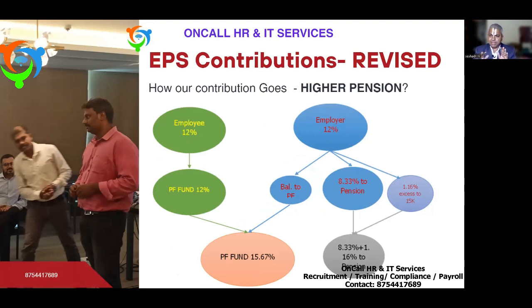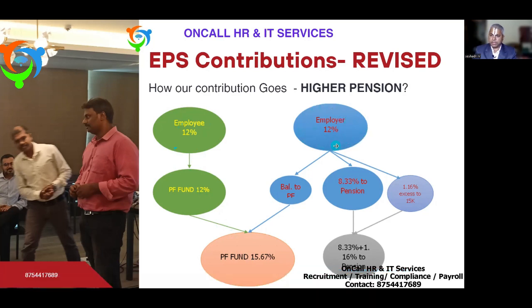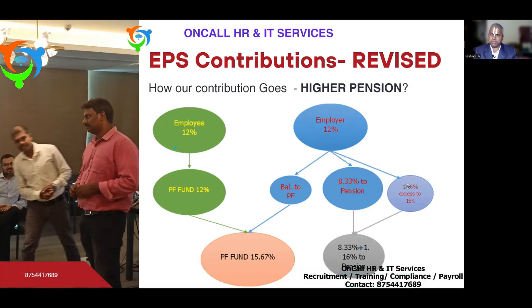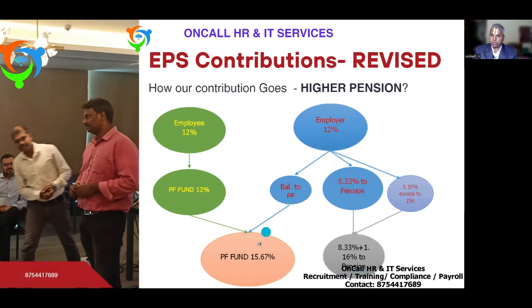As per the gazette dated 3rd May 2023, this is applicable only to higher pension opted people. The employer's 12% is now divided into three parts: First, 8.33% of total PF wages goes to the pension account (no statutory ceiling for them). Second, 1.16% on excess over the statutory limit — that is, whatever PF wage exceeds ₹15,000, 1.16% on that amount also goes to the pension account. Third, the balance goes to the PF account.